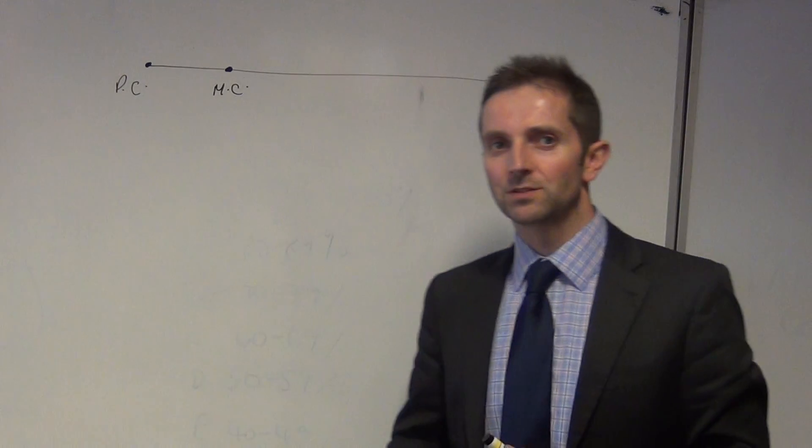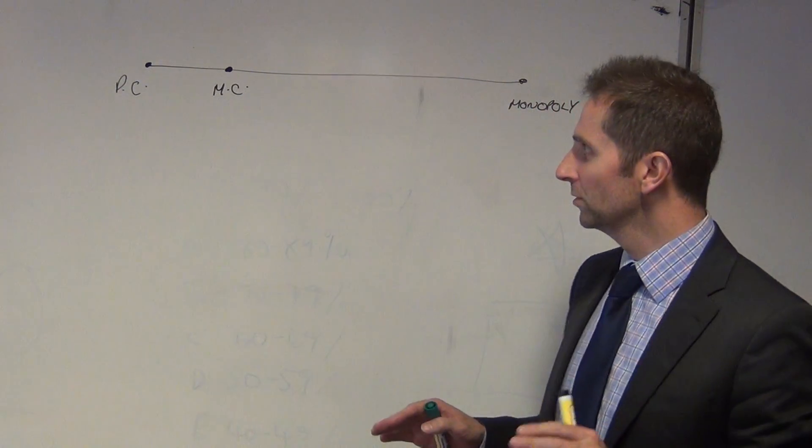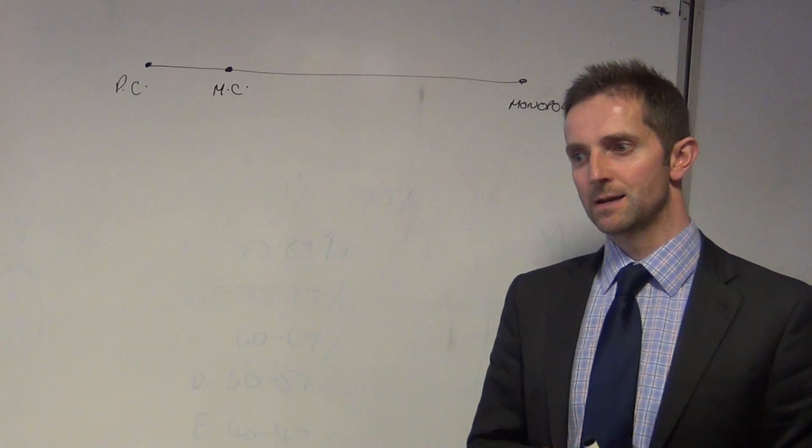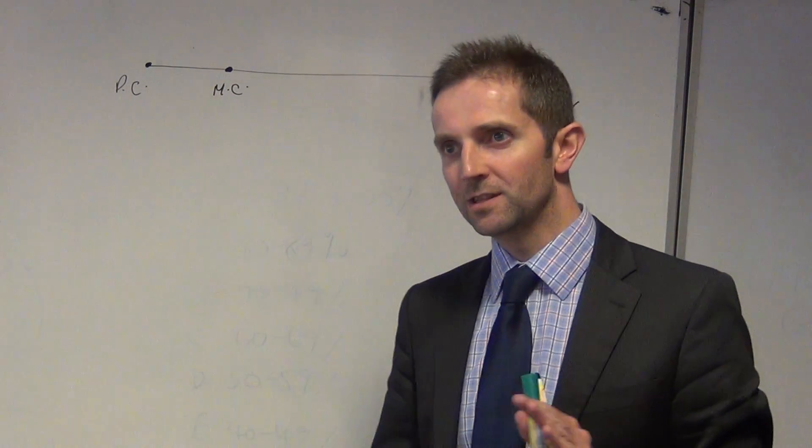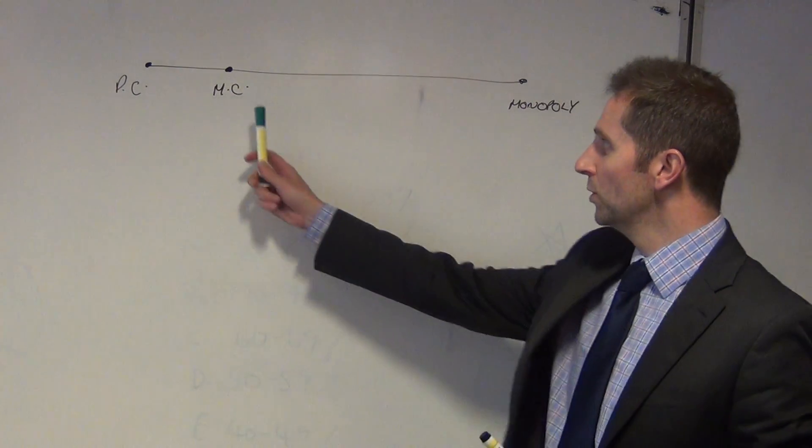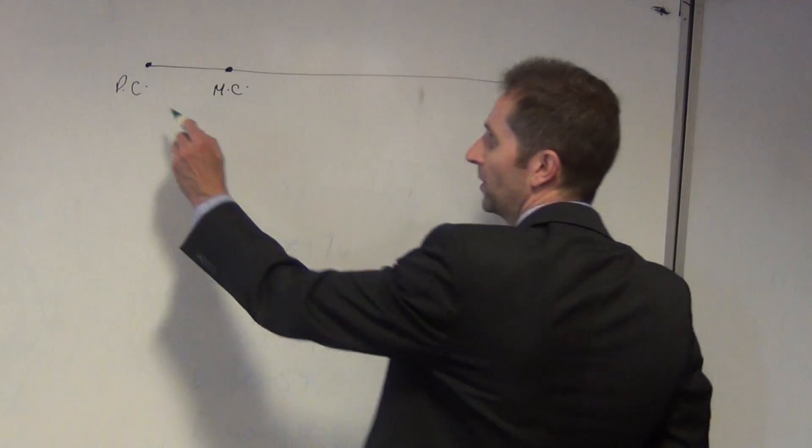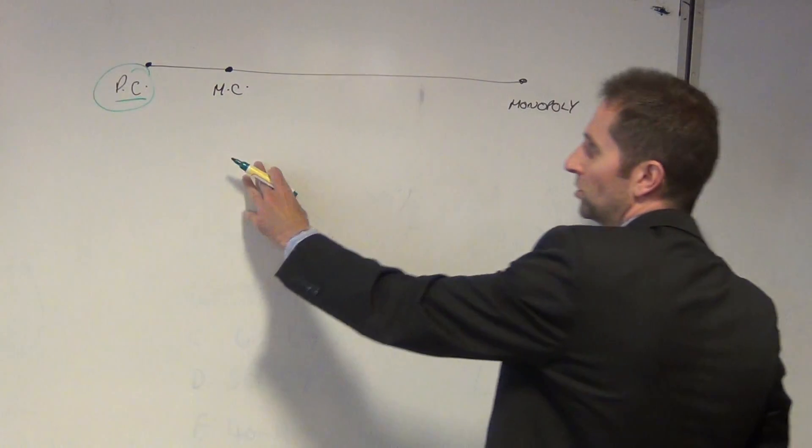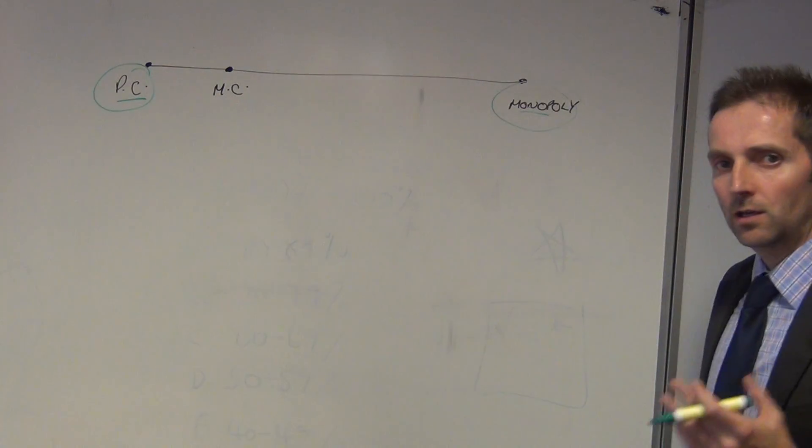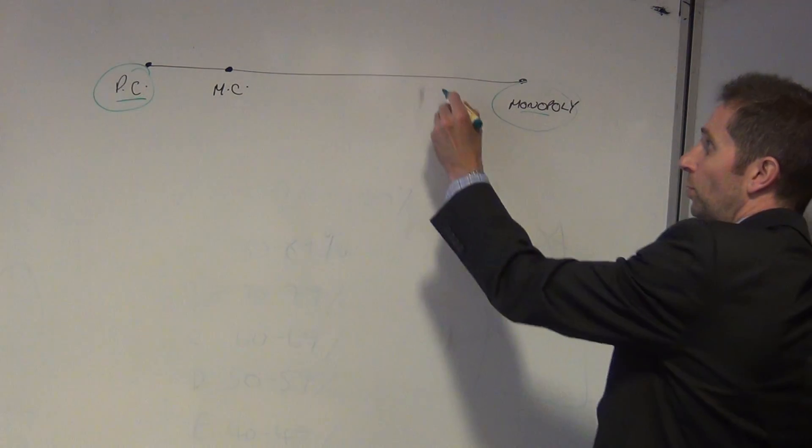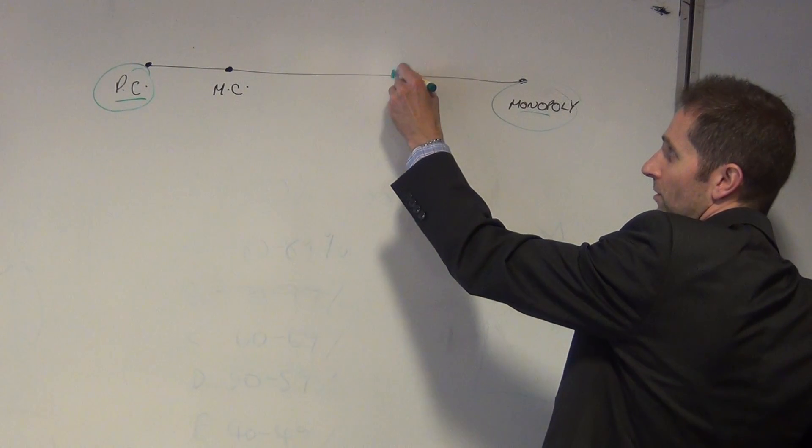Hi guys, Geconomics here again. I'm now going to run through the final market structure which you may be asked about in the exam, which is monopolistic competition. In terms of our spectrum of competitive markets, we've got perfect competition, we've got monopoly, we've already looked at oligopoly which is going to be somewhere in and around here.